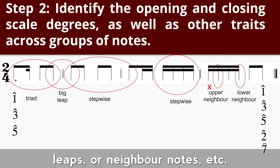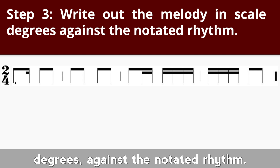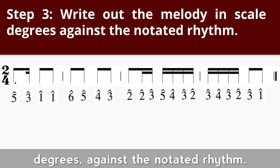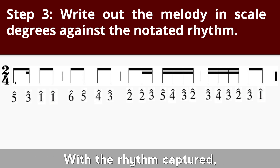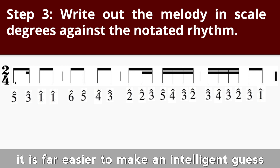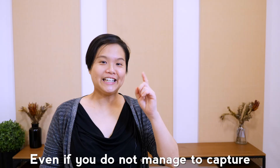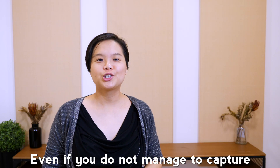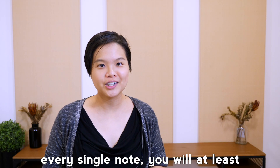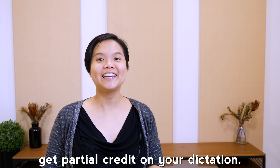Step three: write out the melody in scale degrees against the notated rhythm. With the rhythm captured and the main melodic traits noted, it is far easier to make an intelligent guess on what scale degrees the melody lies. Even if you do not manage to capture every single note, you will at least get partial credit on your dictation.